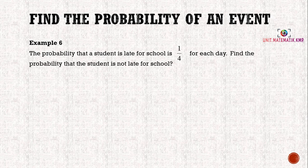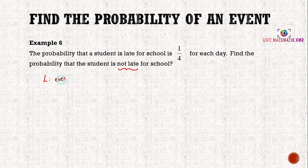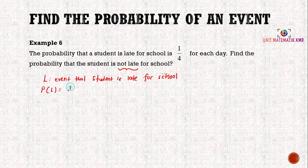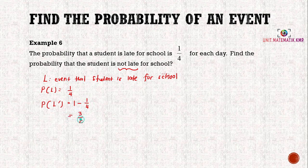Example six: the probability that a student is late for school is one over four for each day. Find the probability that the student is not late for school. We name the event L — event that student is late for school — with probability one over four. The question asks for the complement event, so the probability of L prime is one minus one over four, which gives three over four.